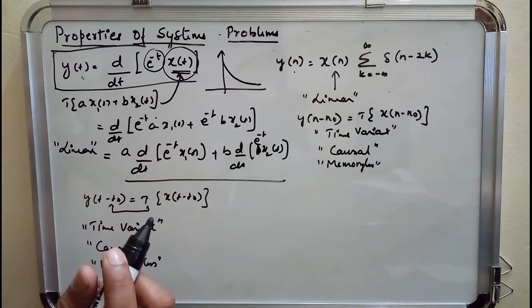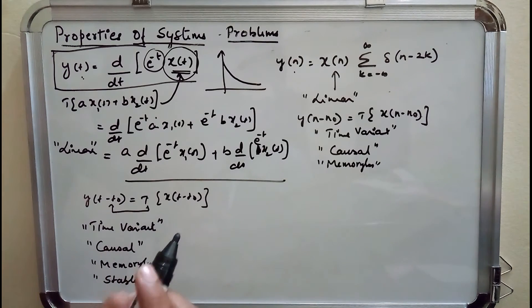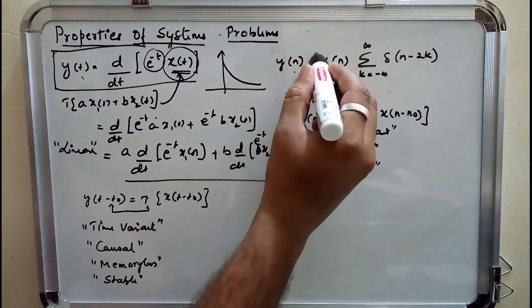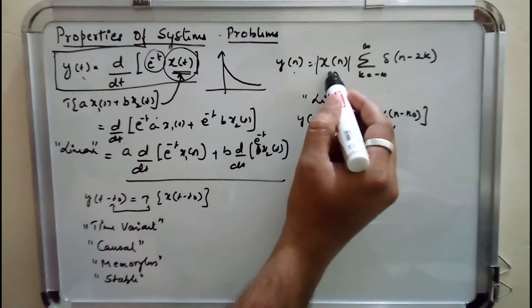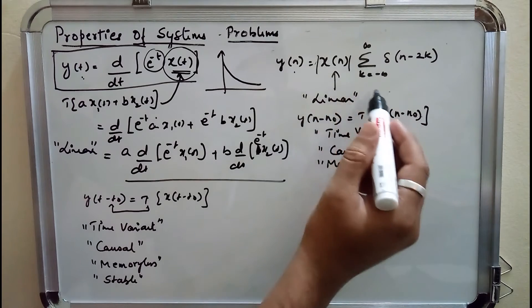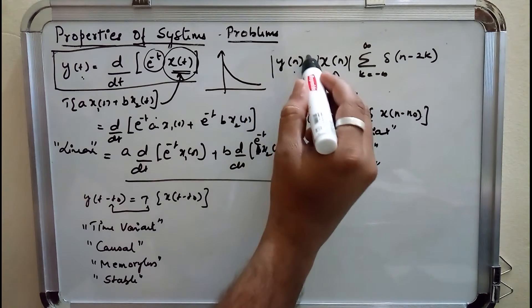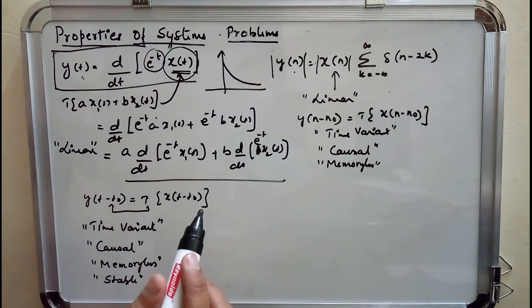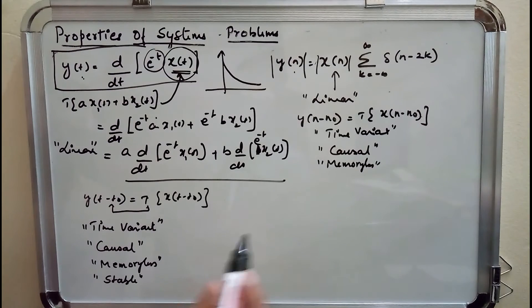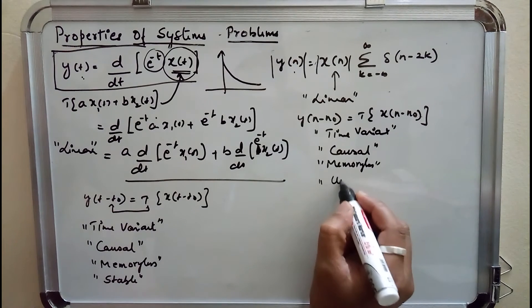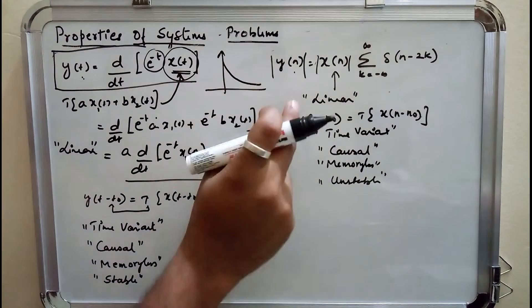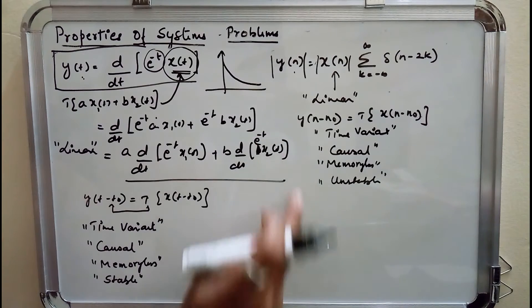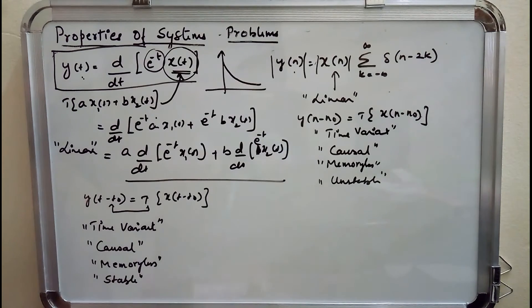For stability, we assume x(n) is bounded. But since we are summing x(n) from −∞ to +∞, the output value will reach infinity. Hence the system is unstable. So the second problem is linear, time variant, causal, memoryless, and unstable.